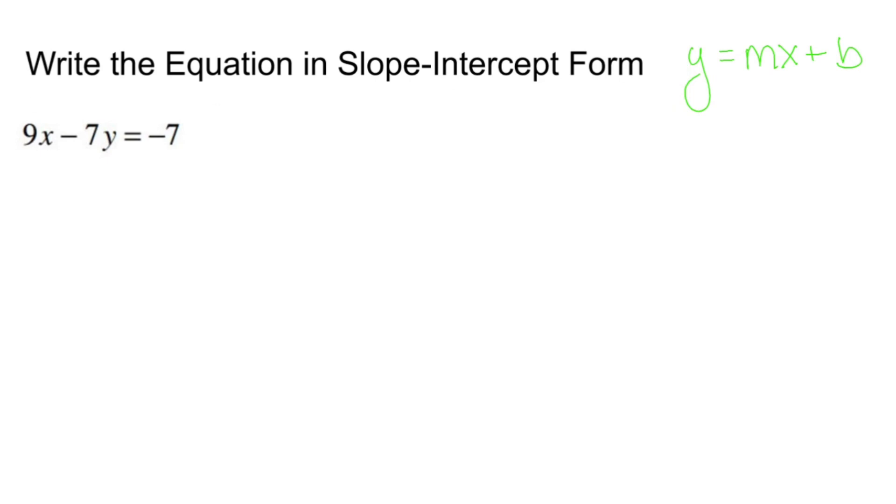What I'm going to do first is if you have an x value floating around on the left, get rid of that first by doing the inverse operation. This is a positive 9x. I'm going to get rid of a positive 9x by subtracting 9x from both sides. That allows you to cancel out.